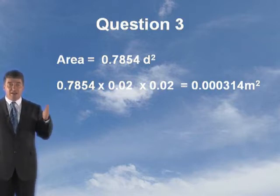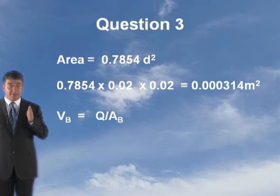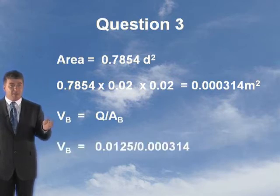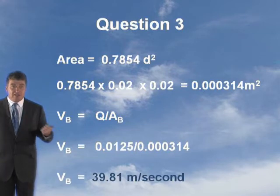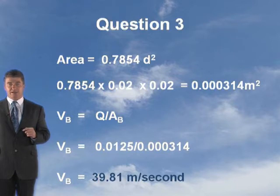Substitute it in. VB equals Q divided by AB. VB equals 0.0125 divided by 0.000314. The velocity at B is 39.81 metres a second. So now you've got the velocity at A and the velocity at B.